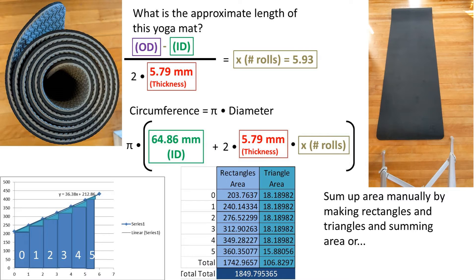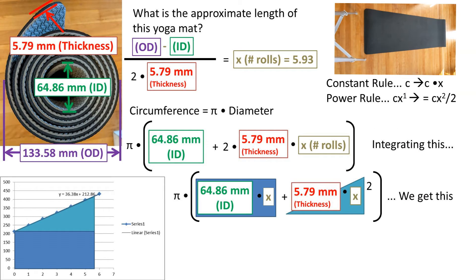Now if we wanted to get all the circumferences added up, we could add the area underneath this equation line. We can do this by making rectangles and triangles. I've listed a table here where I've done so. I personally would probably take the easier route, which is integrating the circumference equation using the constant rule and the power rule in calculus.